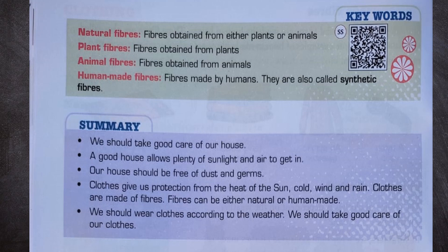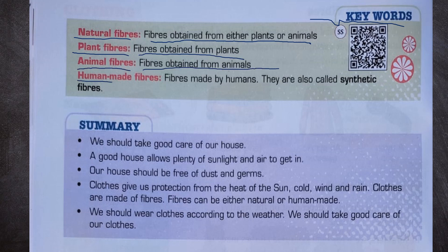Key words: Natural fibers — fibers obtained from either plants or animals. Plant fibers — fibers obtained from plants. Animal fibers — fibers obtained from animals. Human-made fibers — fibers made by humans, also called synthetic fibers.